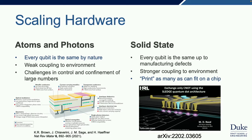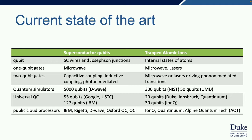Looking at superconductors and trapped ions: for superconducting qubits, we have superconducting wires with Josephson junctions. One-qubit gates use microwaves; two-qubit gates are due to capacitive and inductive coupling. There are huge quantum simulators—D-Wave makes 5,000-qubit devices just north of us in British Columbia. There are universal quantum computers of 55 qubits at Google and USTC in China, 127 qubits announced at IBM. There are also public cloud processors everyone can try—IBM and various startup companies.